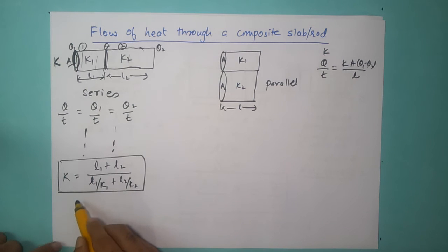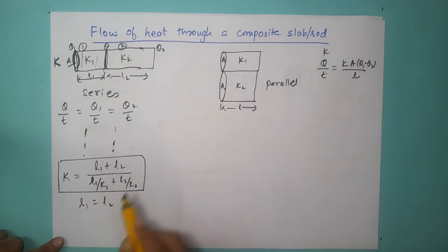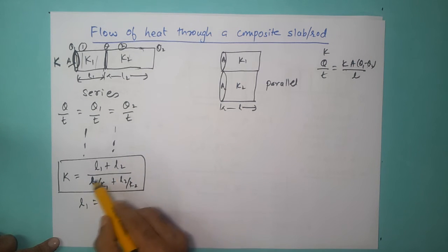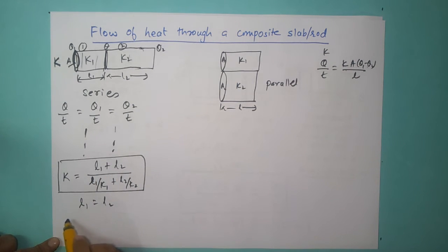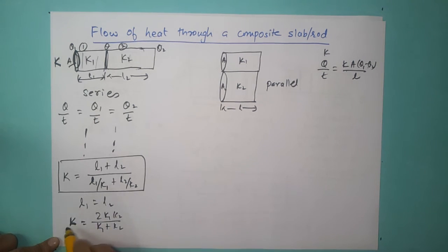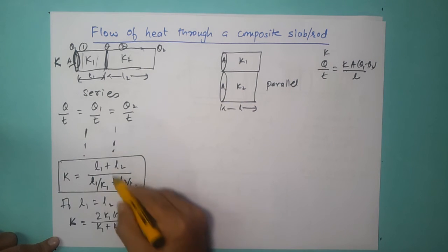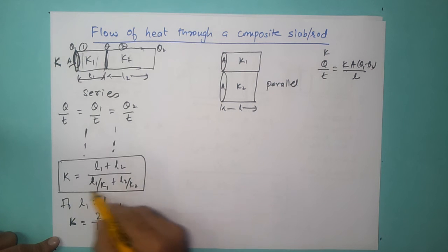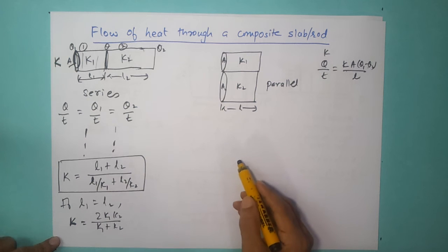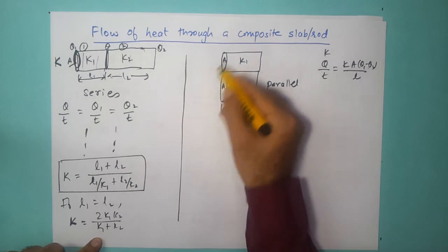If we simplify further by assuming L1 equals L2, then K becomes equal to 2K1K2 / (K1 + K2). But I would want you to focus on the general equation, since that accounts for everything. The main assumptions for these equations are constant cross-sectional area and steady-state conditions.